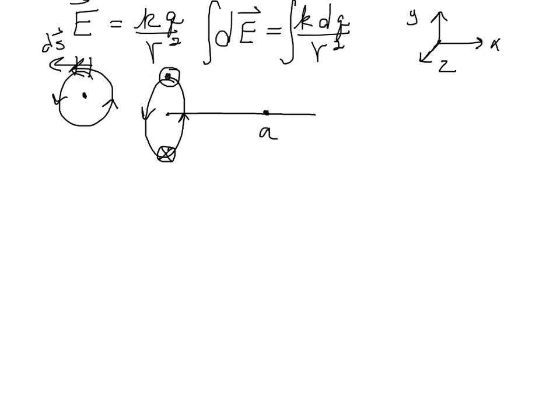So to do this, we use the Biot-Savart law, which says that the small contribution, the differential contribution to a magnetic field due to a small differential length of wire will look like this: